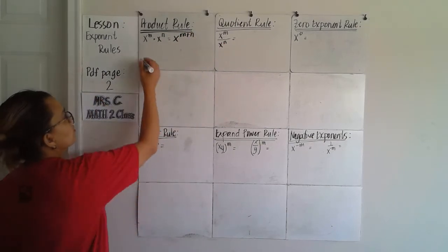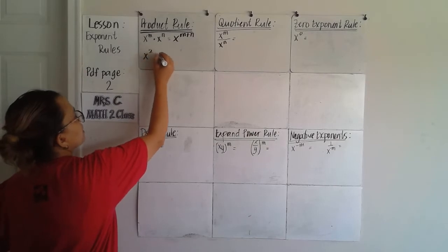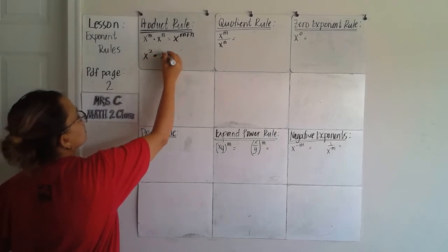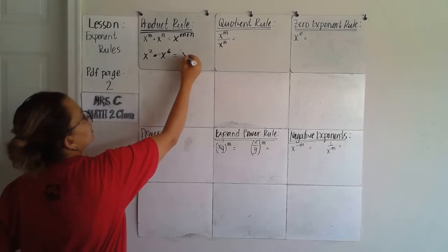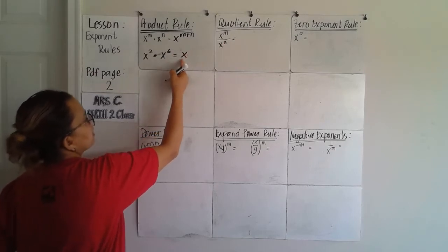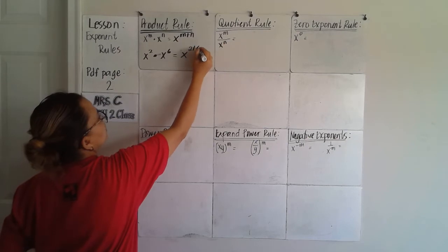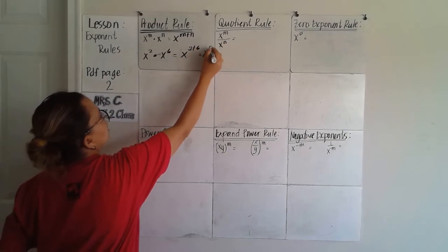I'll give you an example: x squared times x to the 6th. Copy the base and add the exponent, which gives you x to the 8th.